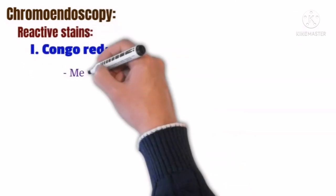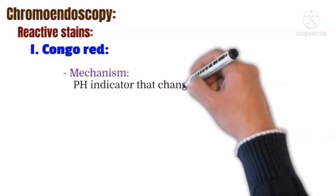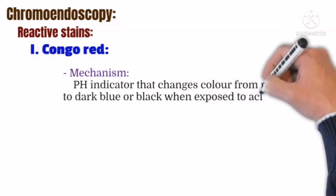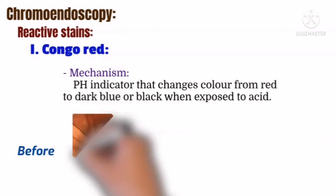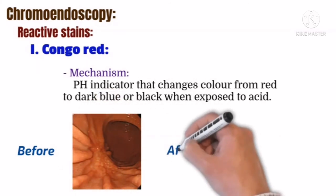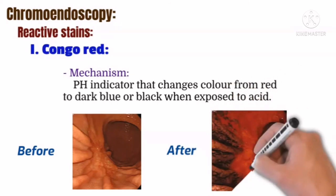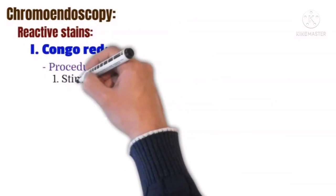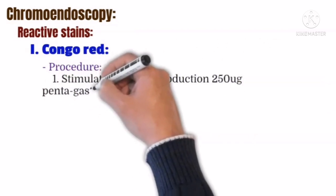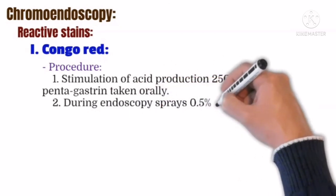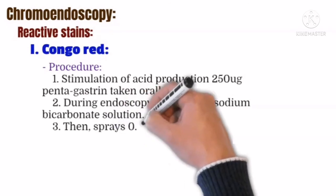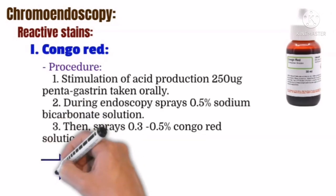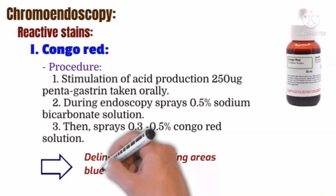The third group is reactive stains. Reactive stains include congo red, which is a pH indicator that changes color from red to dark blue or black when exposed to acid, as shown in the before and after images. Before application of congo red, acid production is stimulated by 250 micrograms of pentagastrin taken orally. During endoscopy, 0.5% sodium bicarbonate solution is sprayed, then 0.3 to 0.5% congo red solution is applied. This stain delineates acid-secreting areas as blue-black areas, while non-acid-secreting areas appear red.